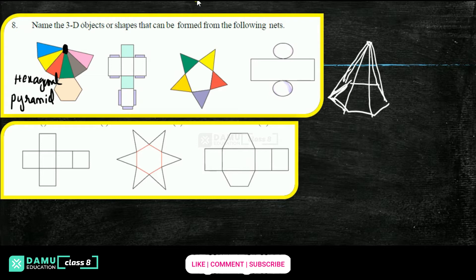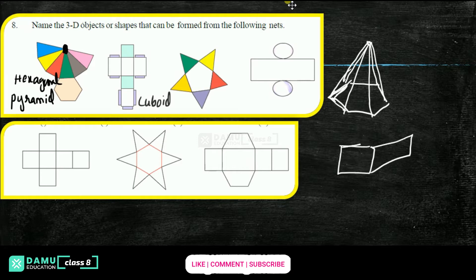Our next one — if you join all of this, you'll get a cuboid. So this is like a cuboid. Let's take the next one: this one is a pentagonal pyramid, since all faces are joining at one point.